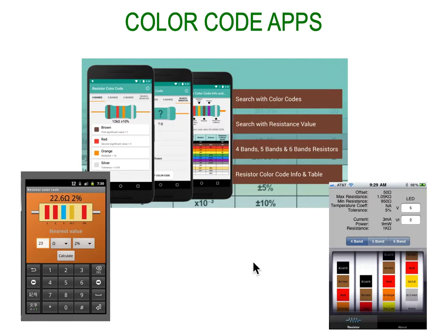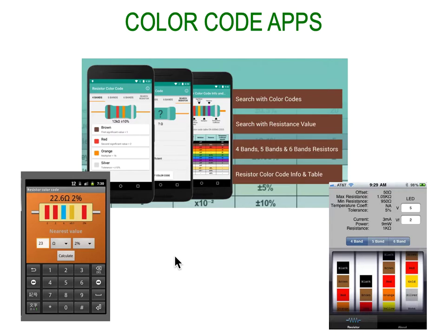These days, we don't require students to actually learn the colour codes. You can buy colour code apps. I downloaded a couple to show you. One app lets you search by colour, by resistance value, or by 4, 5, and 6-band resistors, and there's also a colour code information table. Some apps let you use your camera — take a picture and it will look at the colours of the resistor and tell you the value. You can also get the same apps that run on your computer.